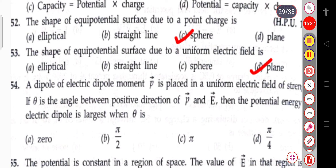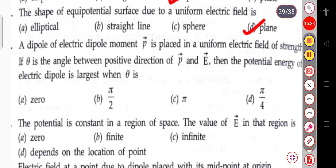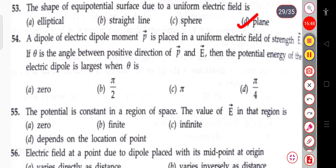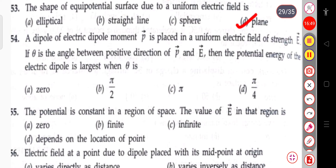The next question: a dipole of electric dipole moment p is placed in a uniform electric field of strength E. If θ is the angle between the positive direction of p and E, the potential energy of the electric dipole is largest when θ = π.